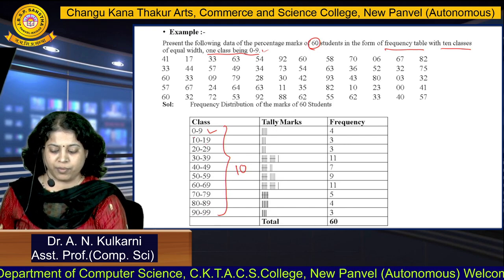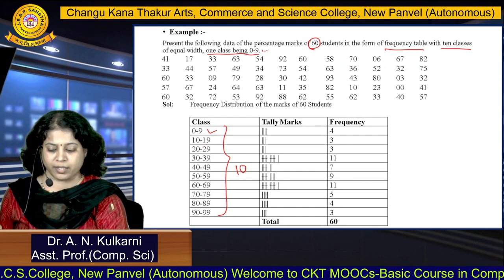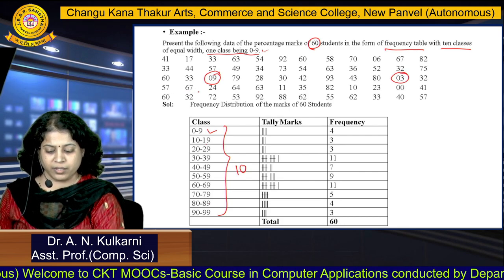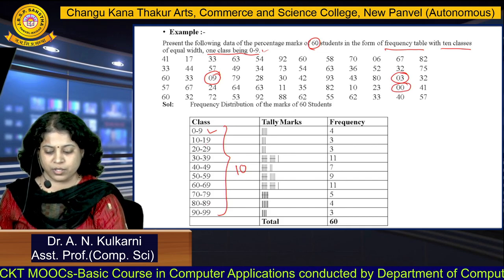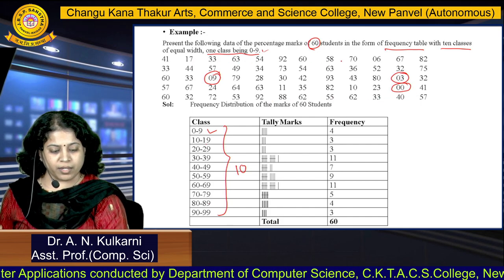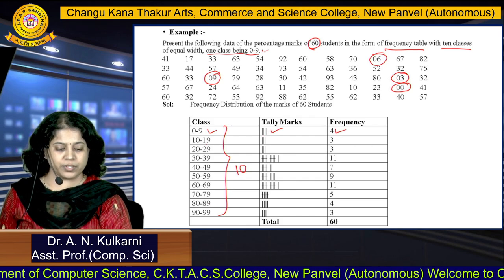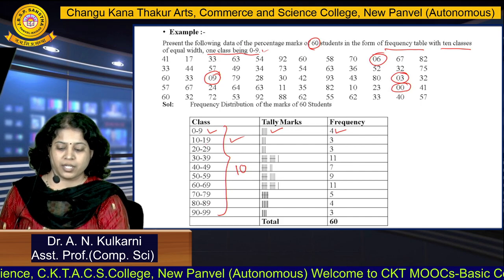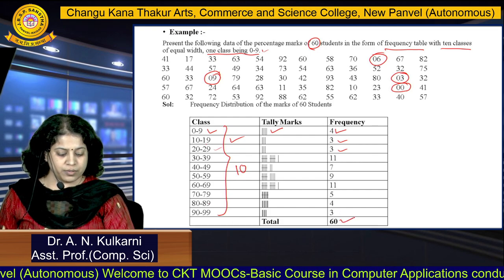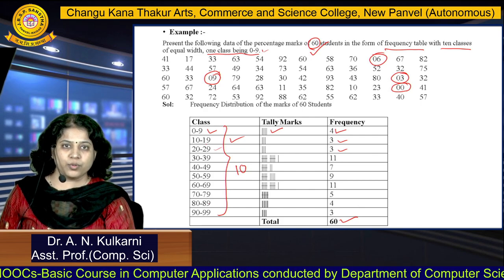Again put the tally marks the same way. For 0 to 9, checking all data rows — values 9, 3, 1, and 6 are found — giving 4 tally marks and frequency 4. For 10 to 19, frequency is 3. For 20 to 29, frequency is 3, and so on. Calculate the total frequency — it equals 60, which is correct, as 60 students' percentage marks were given. This is how you construct the frequency table.